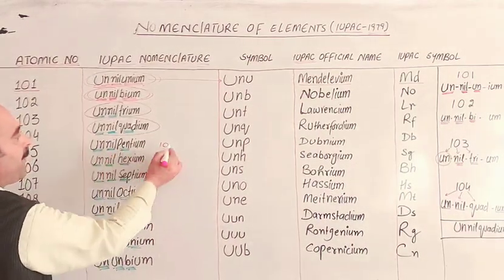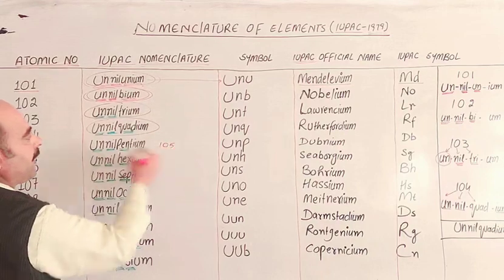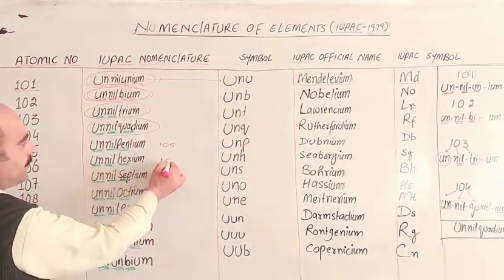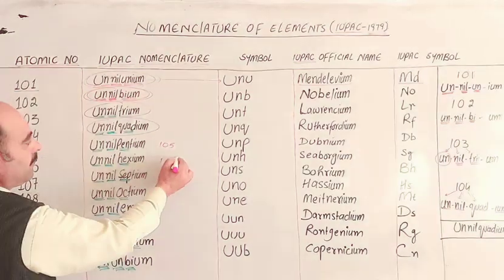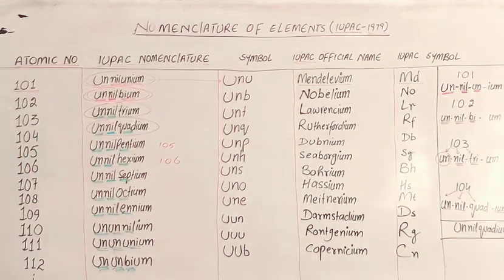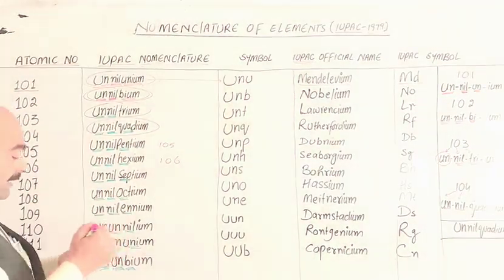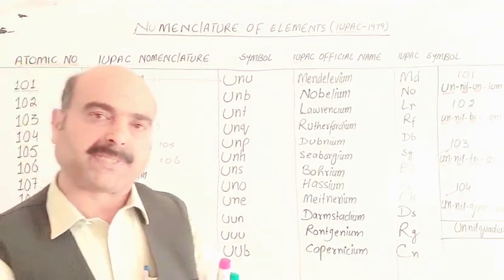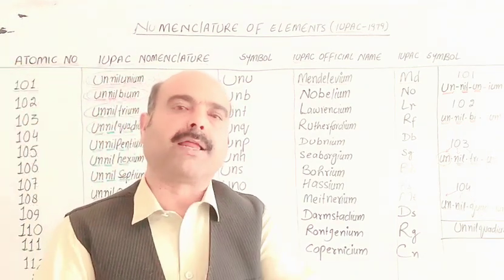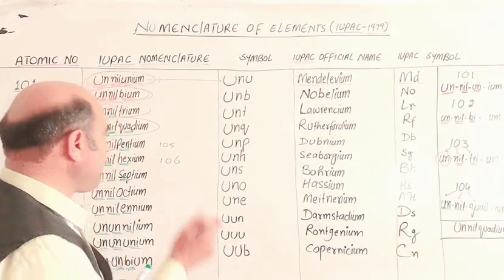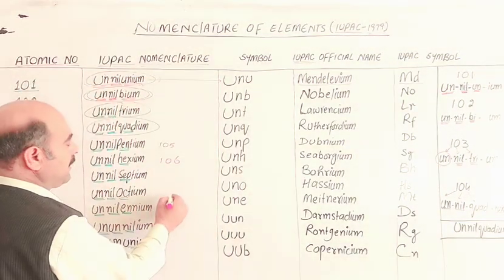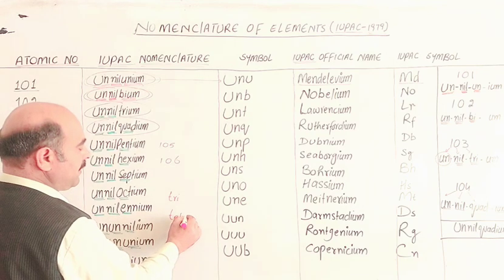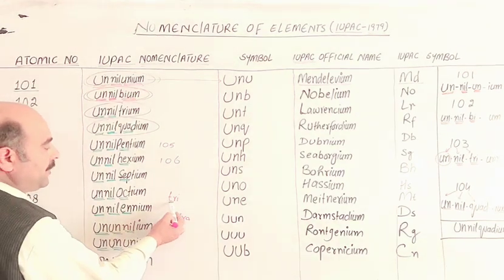For 5, the prefix is 'pent'; for 0, the prefix is 'nil'; for 6, the prefix is 'hex'. That comes from a doubly translated prefix system. Later in Greek, for example, one root is 'tri' and another is also 'tri' — these are Greek and Latin origins of the prefixes.